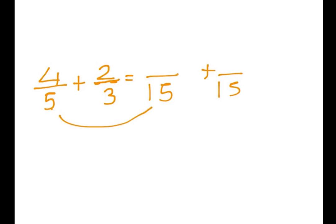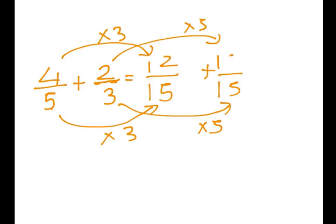And remember, whatever you do to the bottom, you do to the top. So, since we're doing 5 times 3 to get 15, we would do 4 times 3, which is 12. And similarly, we do 3 times 5 to get 15, so we do 2 times 5 now. And the answer is 10.